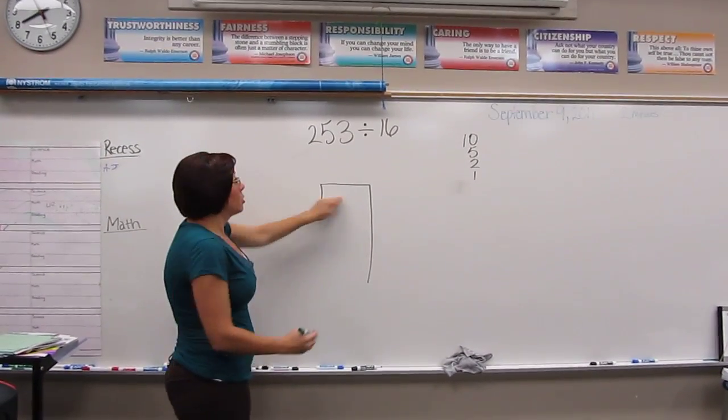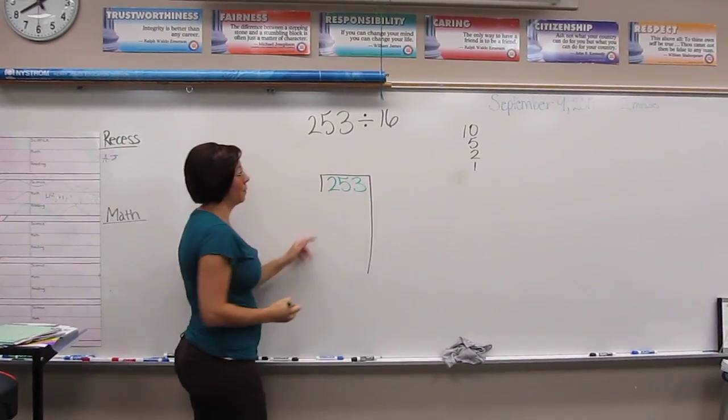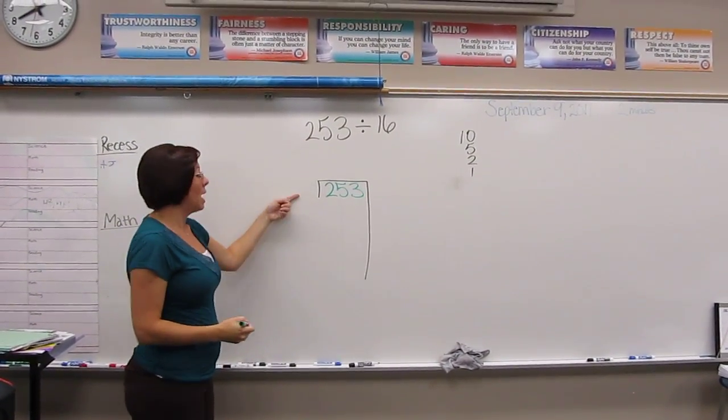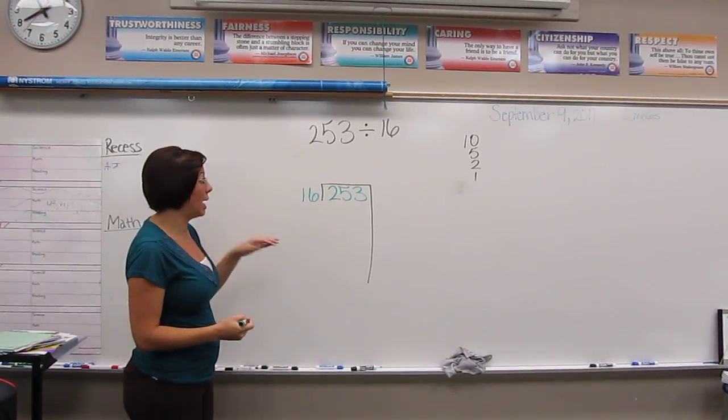On the inside of the box right here, I'm going to write my dividend, as you can see up here, and on the outside, just like normal, I'm going to write my divisor, the number that is doing the dividing.